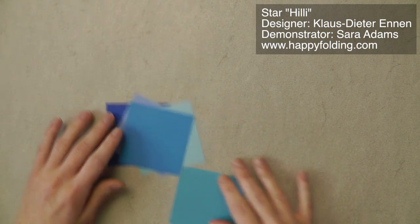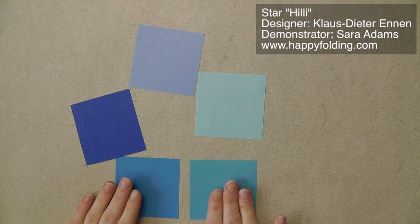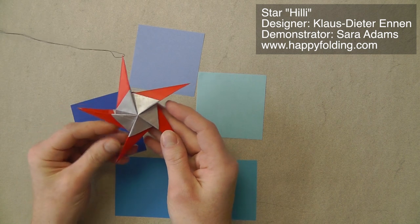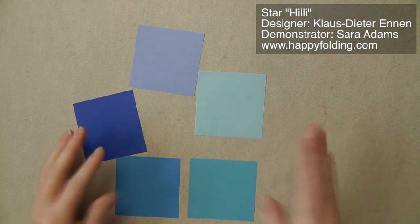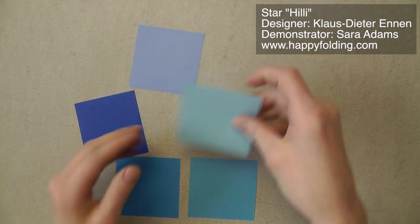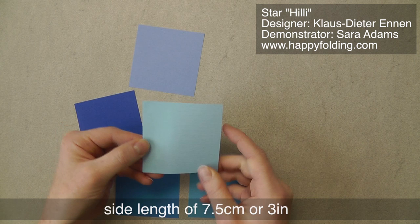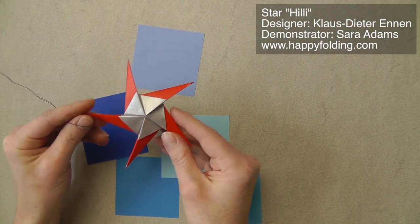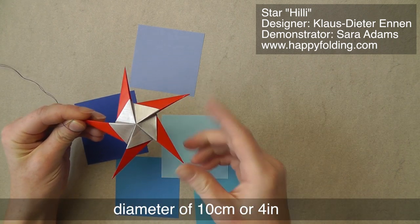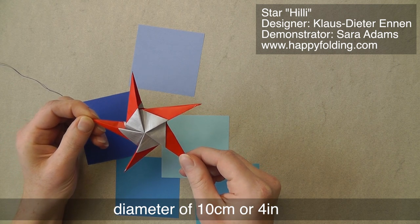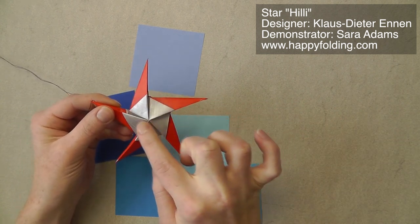To fold this model, you will need five sheets of paper. Just for demonstration purposes, I'm going to be using five different colors, but as you can see here, I used the same color all around. If you start with a square sheet that has a side length of 7.5 cm or 3 inches, then the resulting star will have a diameter of about 10 cm or 4 inches.